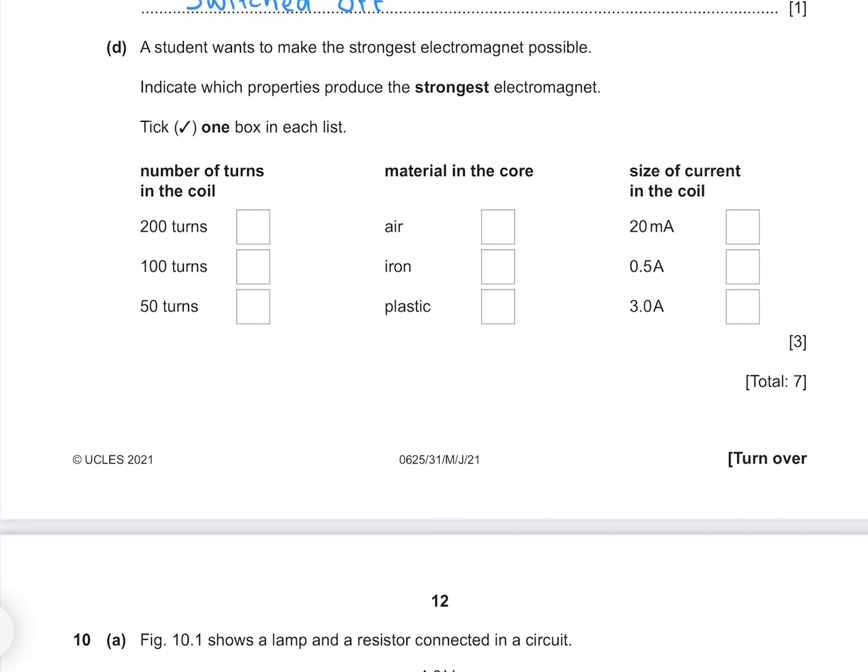A student wants to make the strongest electromagnet possible. Indicate which properties produce the strongest electromagnet. For the number of turns in the coil the more the merrier. For the material in the core the best material is iron, because you want something that is magnetic. And for the size of the current in the coil, once again the more the merrier, which is our 3 amps. They've tried to be sneaky with our 20 here, but of course that is milliamps.